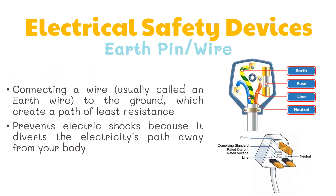Another safety device involves connecting a wire — usually called an earth wire — to the ground, which creates a path of least resistance. Electricity travels through this path and into the ground. This prevents electric shocks because it diverts the electricity's path away from your body.